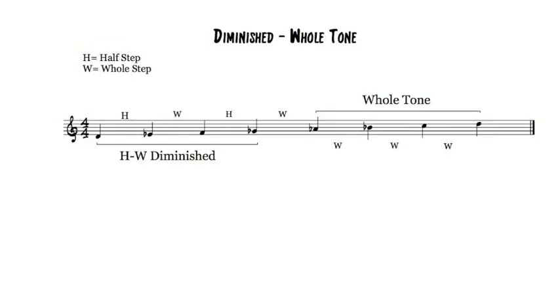The diminished whole tone approach is great for people who think intervallically. Simply put, the first four notes are from the half-whole diminished scale, and the second four notes are from the whole tone scale. When you combine them, you get the diminished whole tone scale.